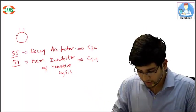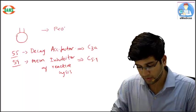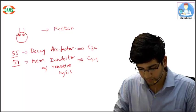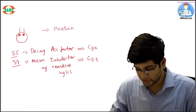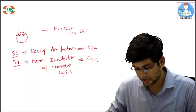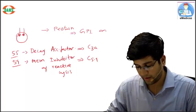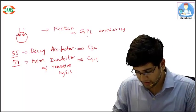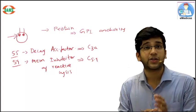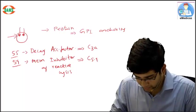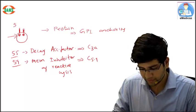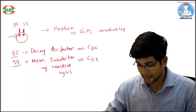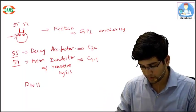Whenever I sleep, complement will be activated. CD55 and 59 protect us from complement-mediated damage. In PNH, for these two proteins to be stuck in my RBC, I need a molecule which is required. These two proteins are called GPI anchoring proteins - the glycophosphatidylinositol. With the help of this glycophosphatidylinositol, CD55 and 59 can be stable on the surface of RBCs.